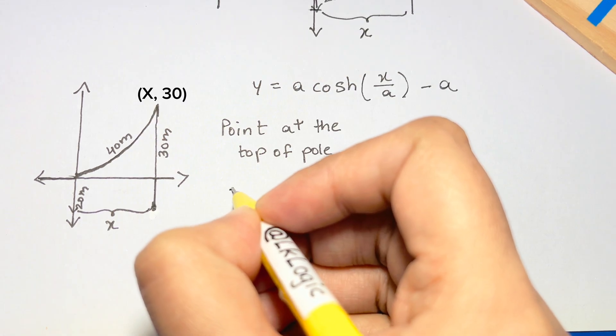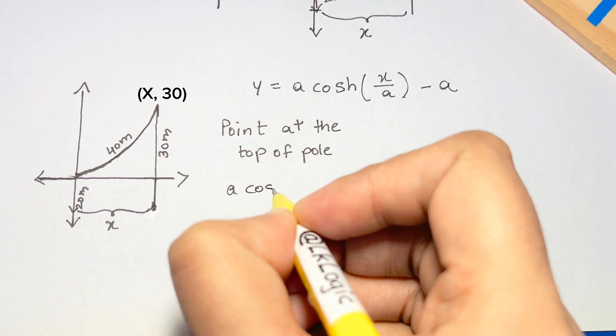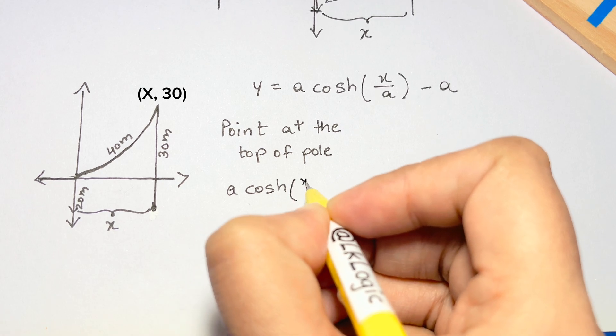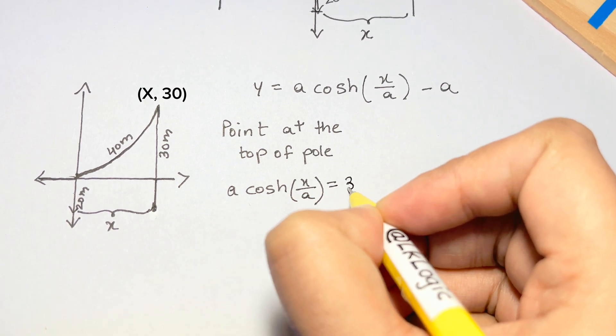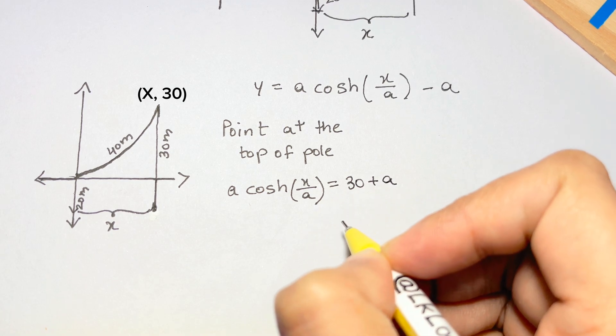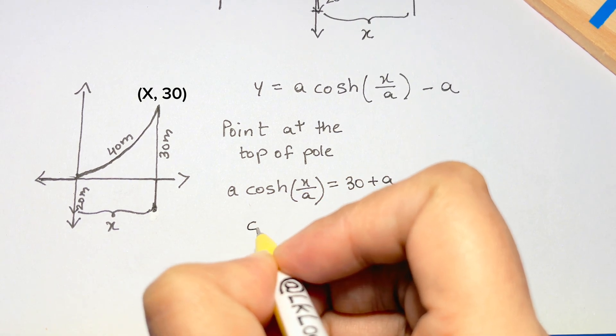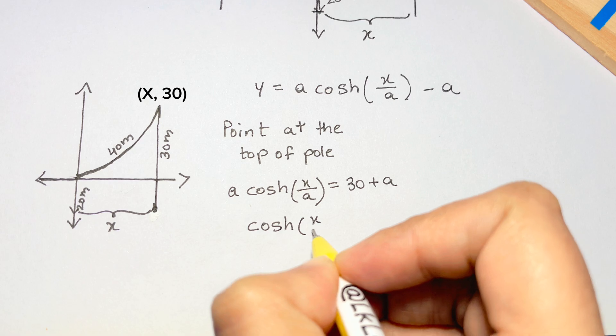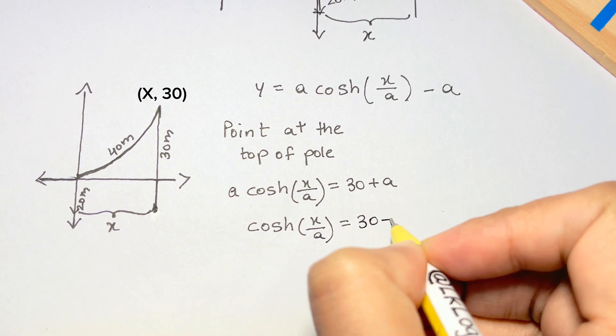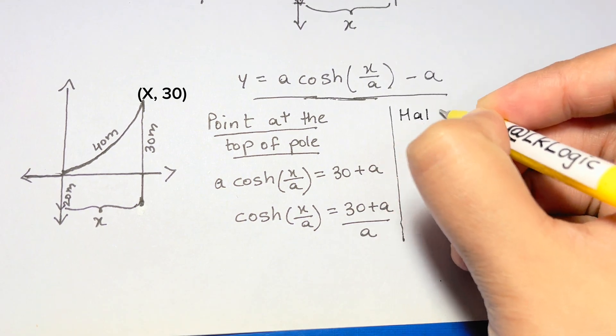So we can use this point at the top of the pole to get one equation. This simplifies to be a cosh of x over a is equal to 30 plus a. It will be convenient to divide both sides by a. The cosh of x over a is equal to 30 plus a all over a.